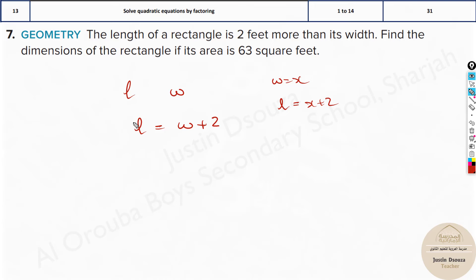I can write l equals w plus 2, and I can write w plus 2 instead of l. It's better to write in terms of x. Now I know if I multiply x and x plus 2, that is length and width, I must get the area of 63.